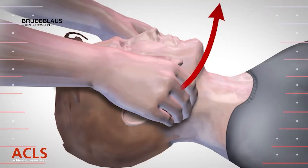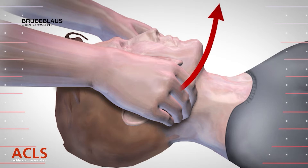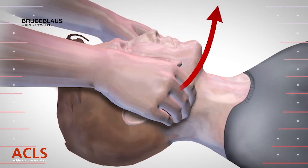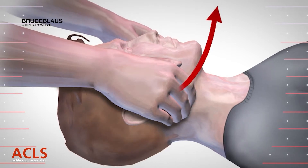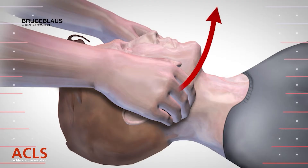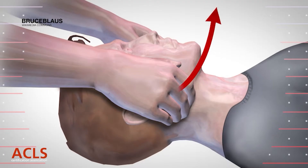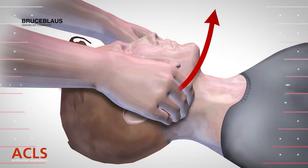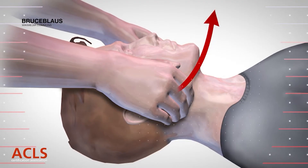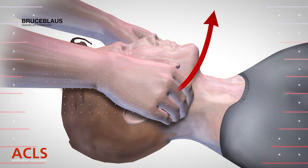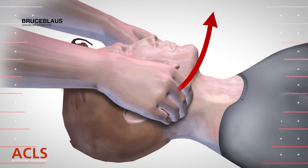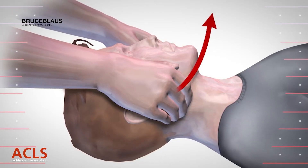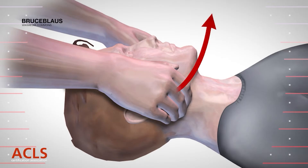The jaw thrust maneuver should be used to open the patient's airway. If you suspect a head or spinal cord injury, you should use the jaw thrust maneuver to avoid further injury to the spinal cord. Using the head tilt-chin lift maneuver on a patient with a spinal cord injury could cause permanent injury.